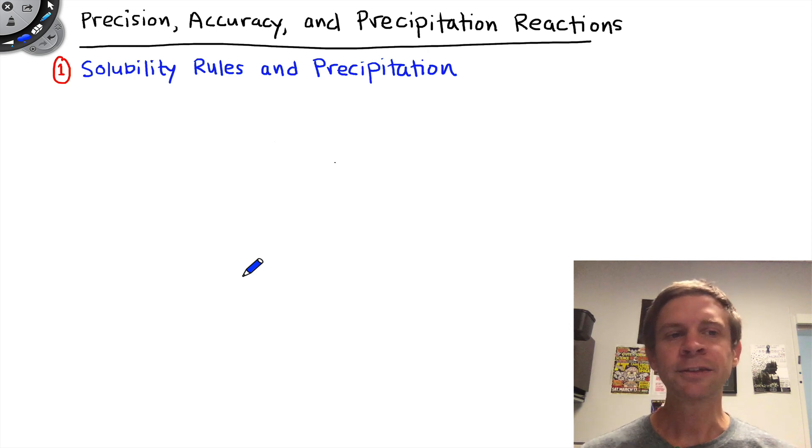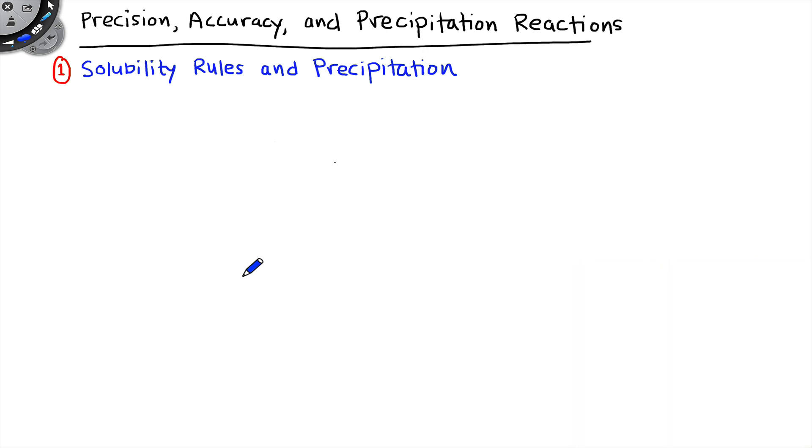Let's start with the solubility rules and precipitation, which is related to the first part of the experiment. The solubility rules are a set of rules that allow us to look at an ionic compound and draw a conclusion about whether it is expected to be soluble in water or not. A particular solubility rule has one of two forms. Either it says salts of such and such class of ions are soluble, and often the class of ions is a particular group in the periodic table or a set of related polyatomic anions,